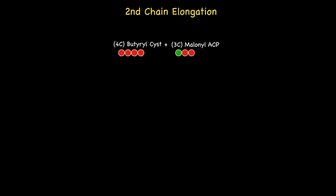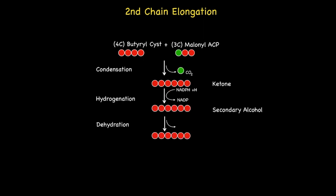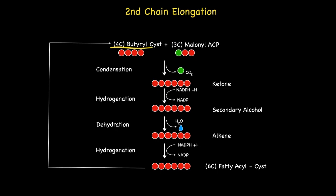So in order to help you consolidate the steps that occur during the first chain elongation, here is a quick schematic of what occurs during the second chain elongation. Note how we begin with a 4-carbon fatty acyl group and we end up with a 6-carbon fatty acyl group attached to the cysteine residue on fatty acid synthase. Each of the steps is exactly the same with condensation first, hydrogenation second, dehydration third, and hydrogenation fourth and last.